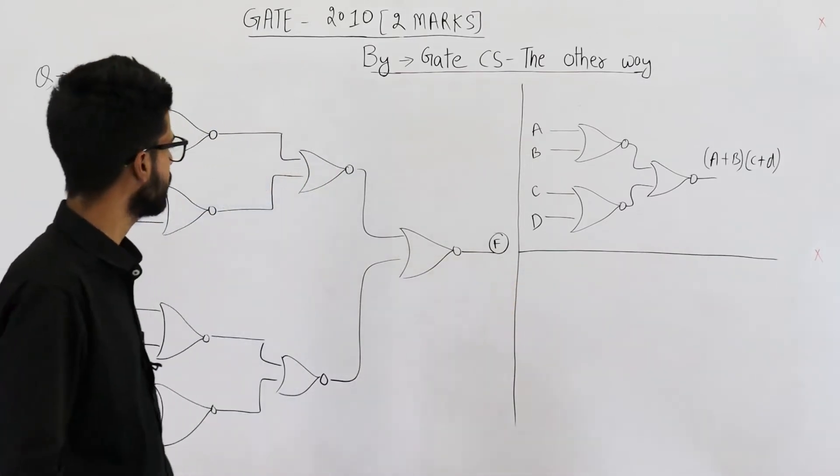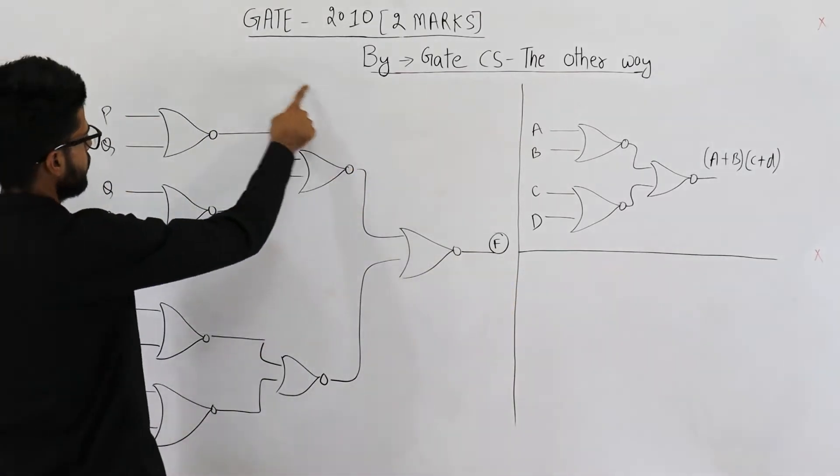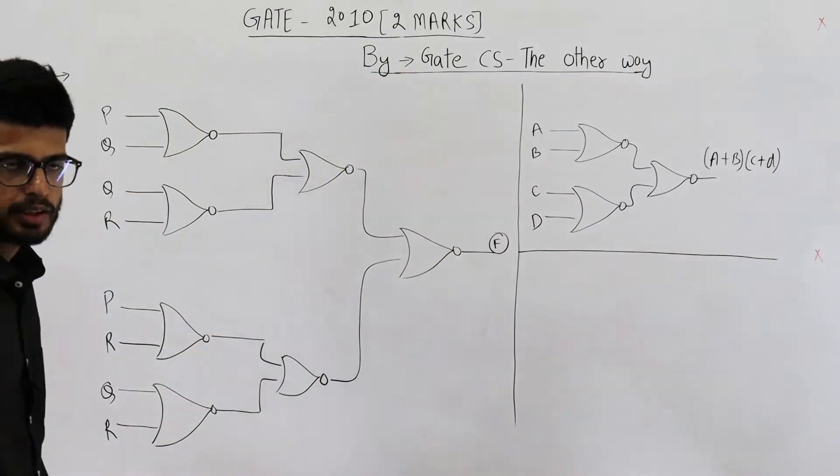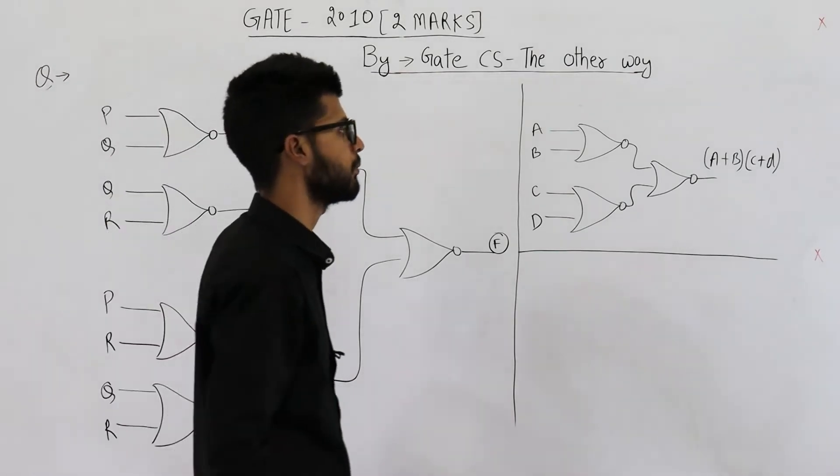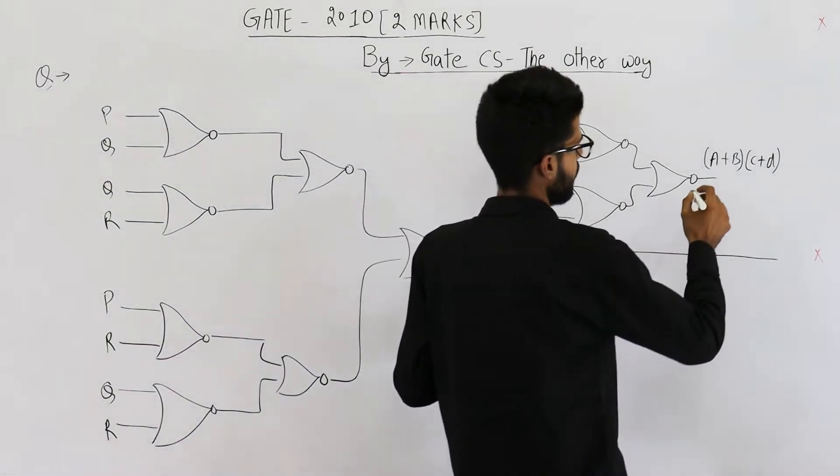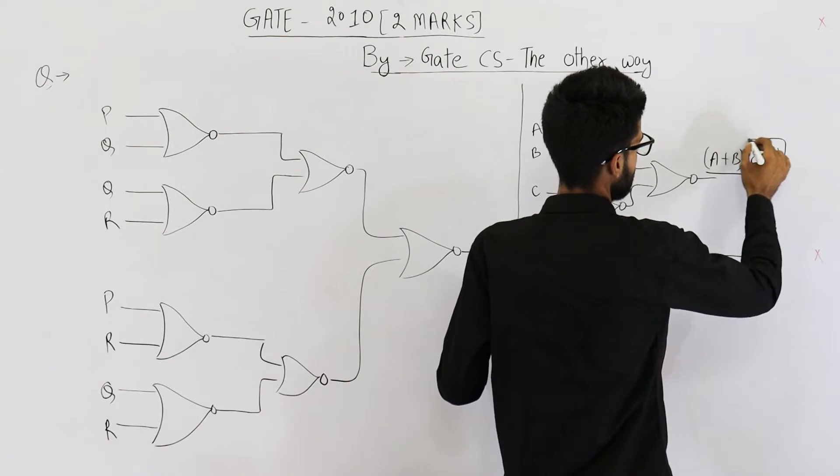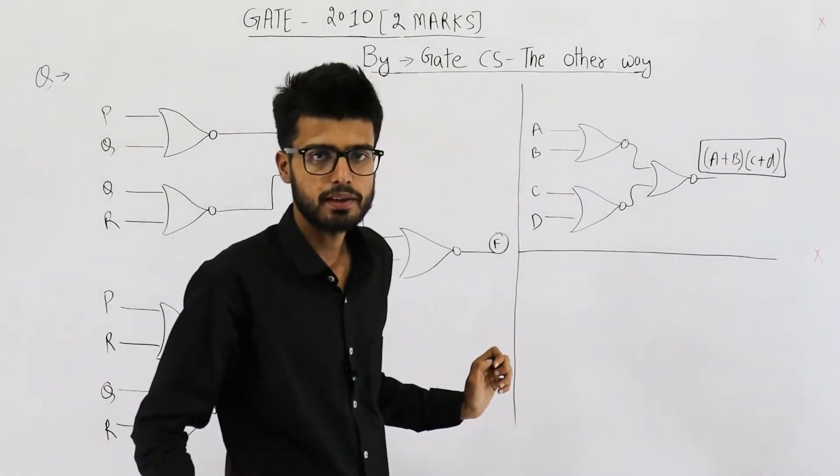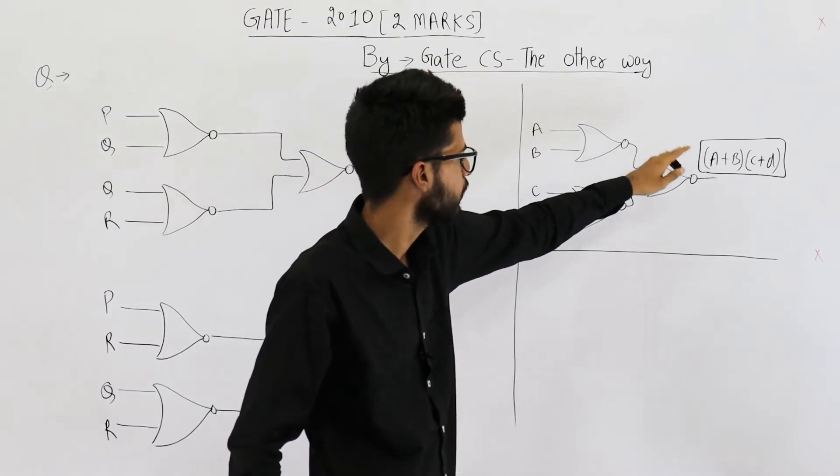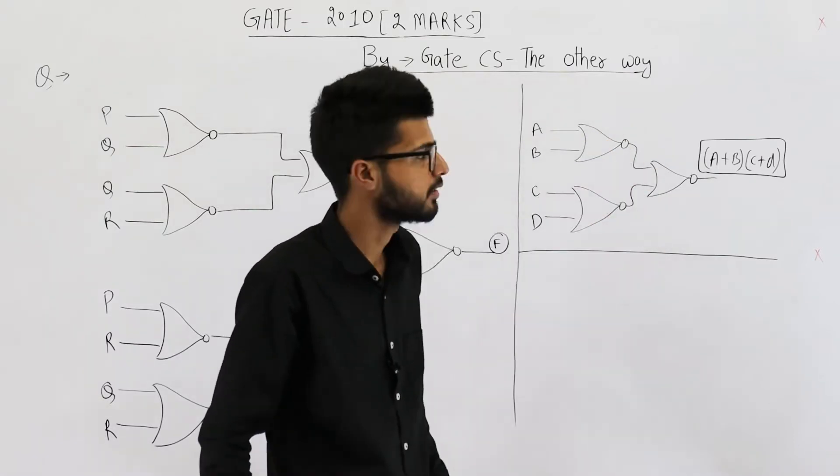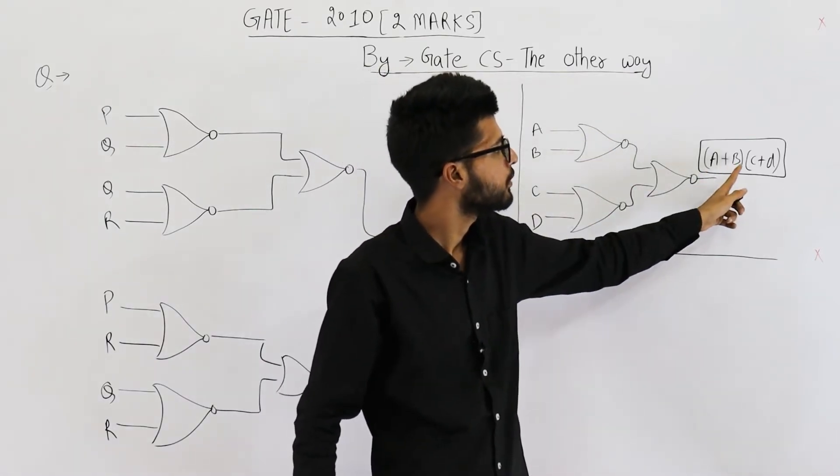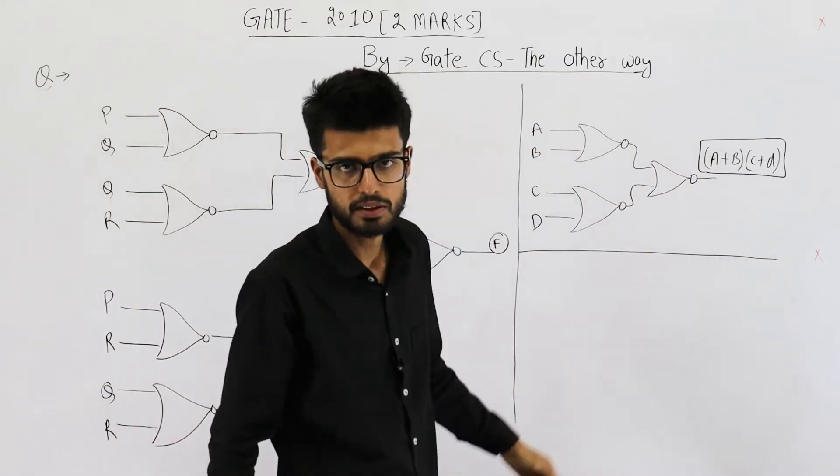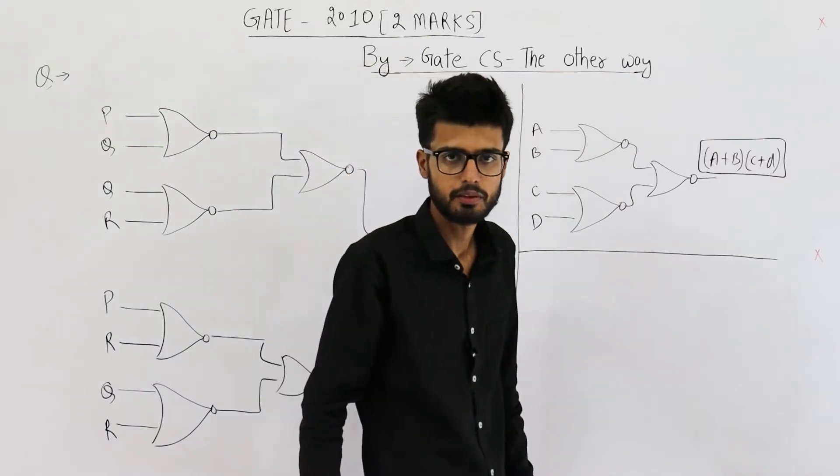So now this part of the circuit, this much, it seems familiar. I have taught you in my theory lectures that for implementing any POS type of expression, that is product of sums expression, we use NOR gates. So output of such a structure of NOR gates will be A plus B dot C plus D, where A, B, C, D are these respective inputs of first and second NOR gate.